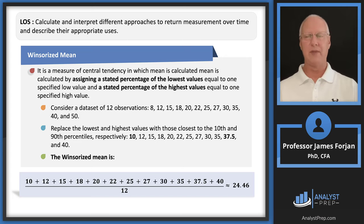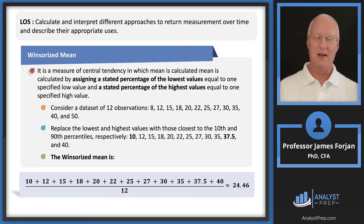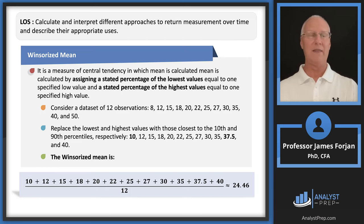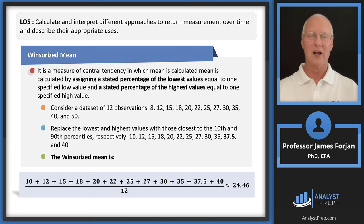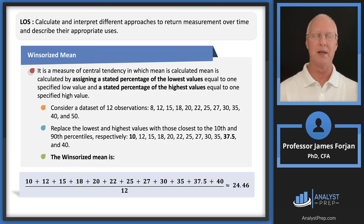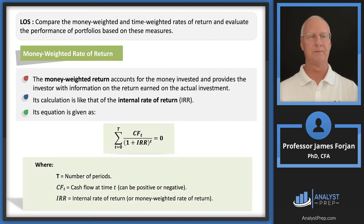Go ahead and compute the Winsorized mean. If the Institute asked you to take the average of 12 numbers on an exam, get your calculator out. That's why the Institute wants you to use a financial calculator — with this one you can tell how many numbers you entered using the sigma button, and with the Texas Instruments you can check with the N button.